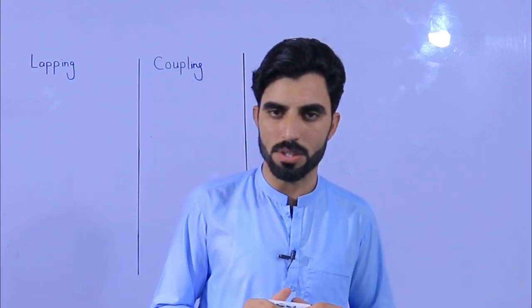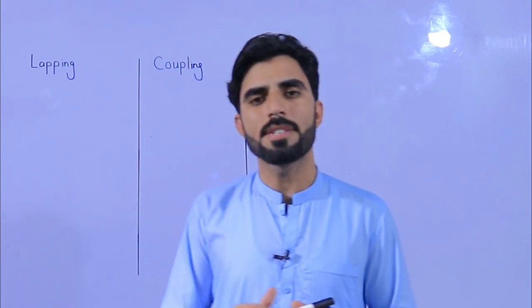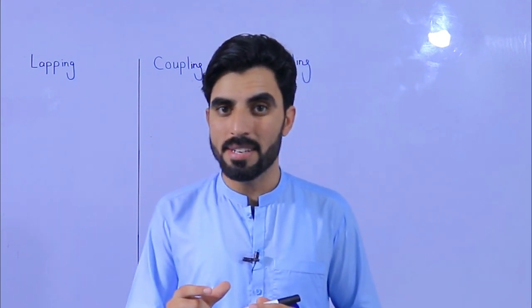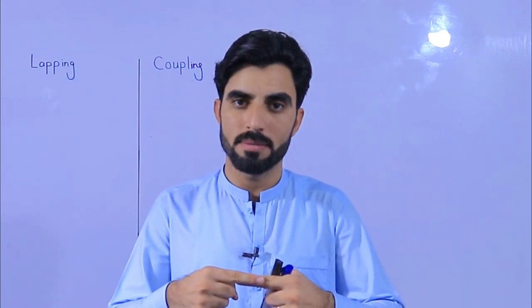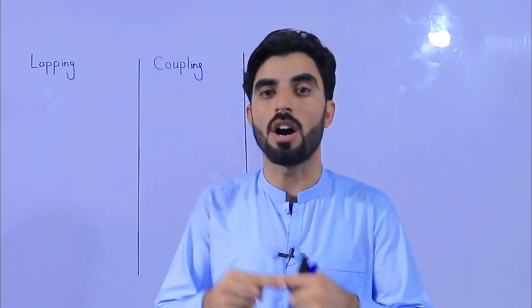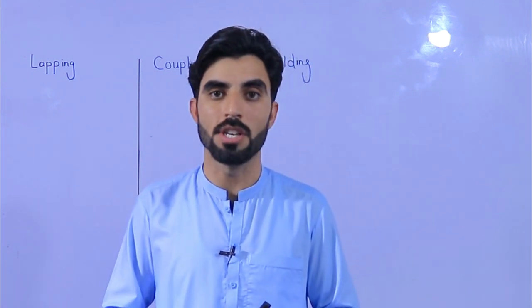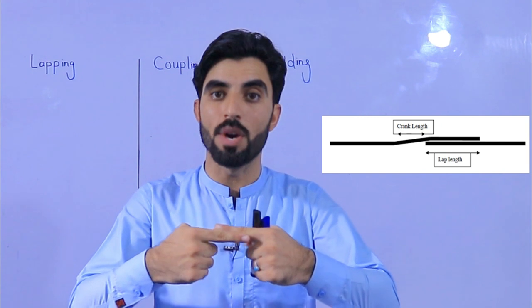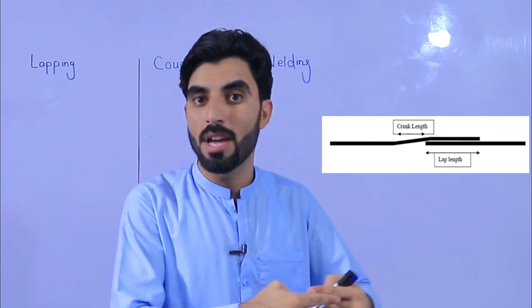Assalamualaikum guys, welcome back to 7Engineers YouTube channel. Today's topic is the most important in building construction, related to overlapping length. As you know, for insufficient length we need to increase the length of steel. From the factory we have a standard length of steel rod that is 12 meters, so if we have insufficient length for beam, column, and slab, to get the full length of steel bar we overlap one steel bar to another.